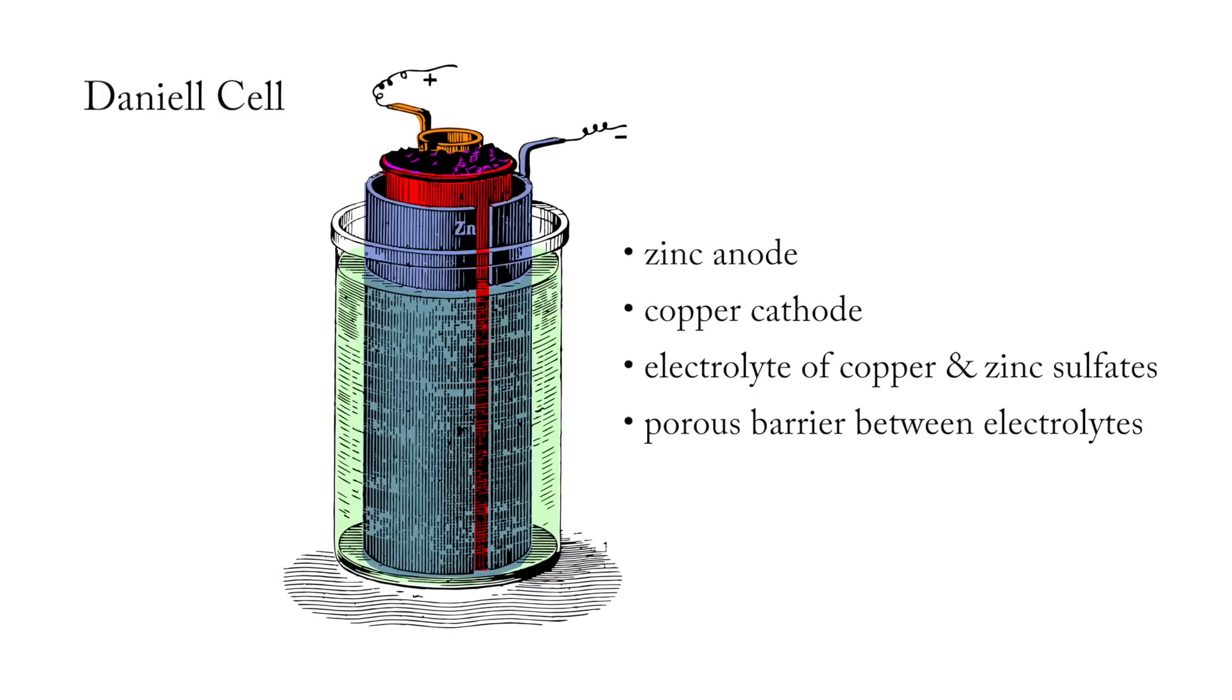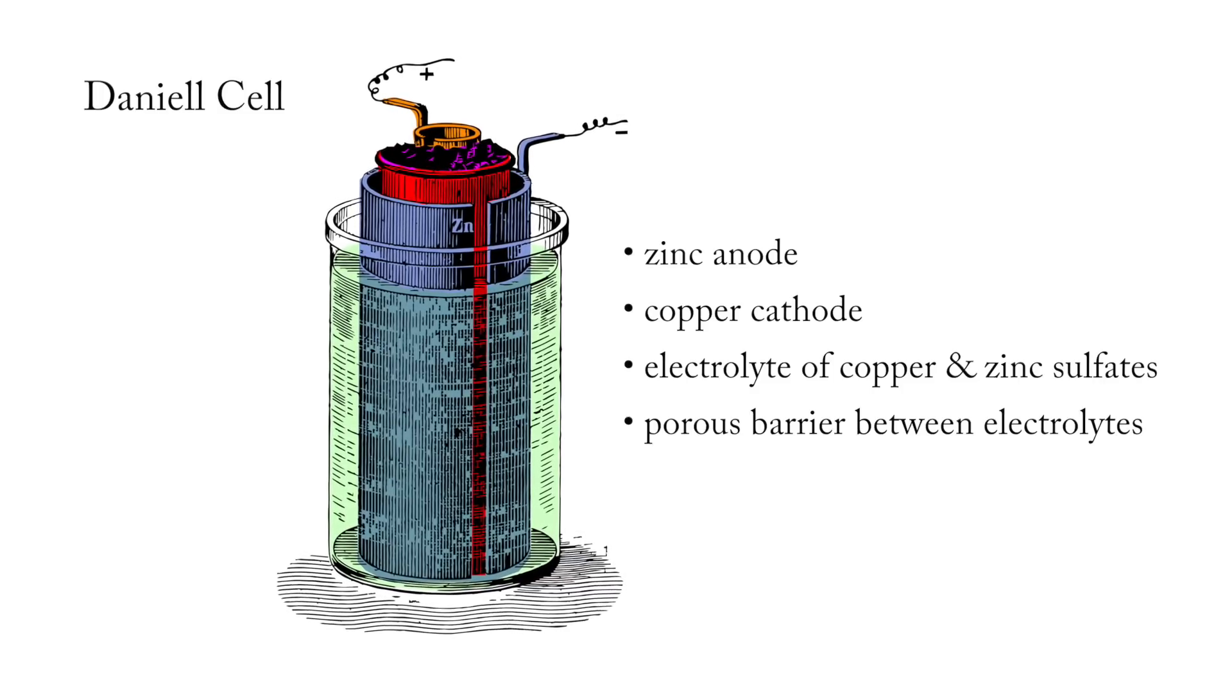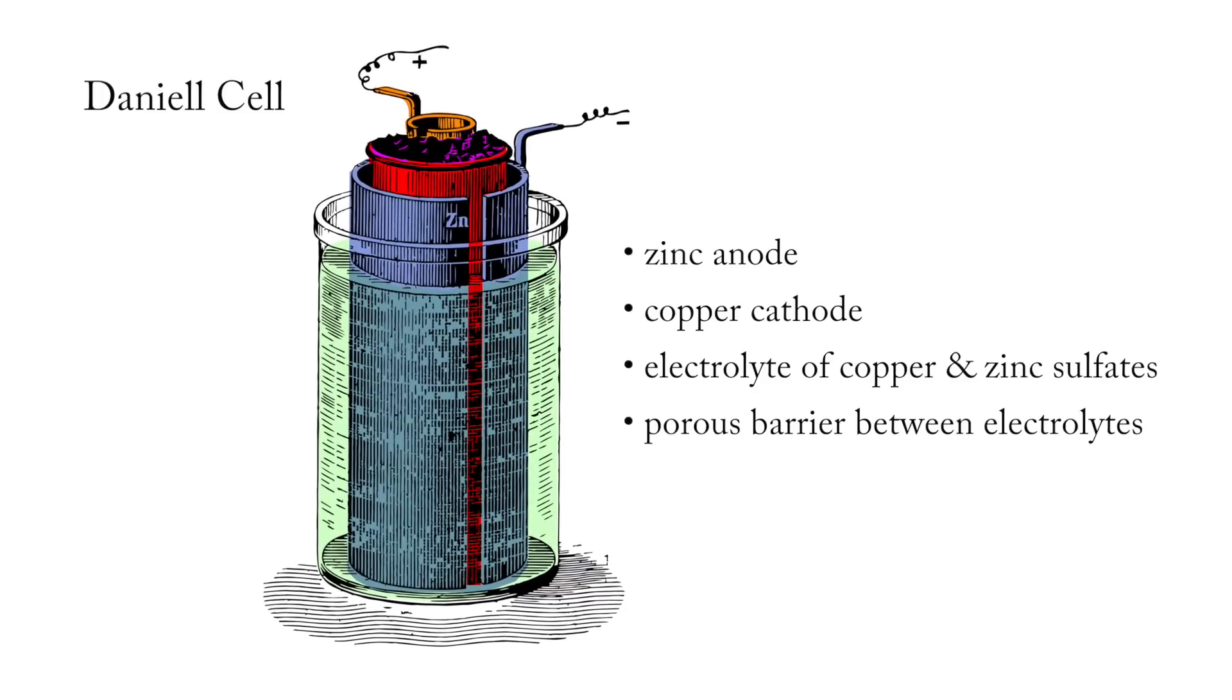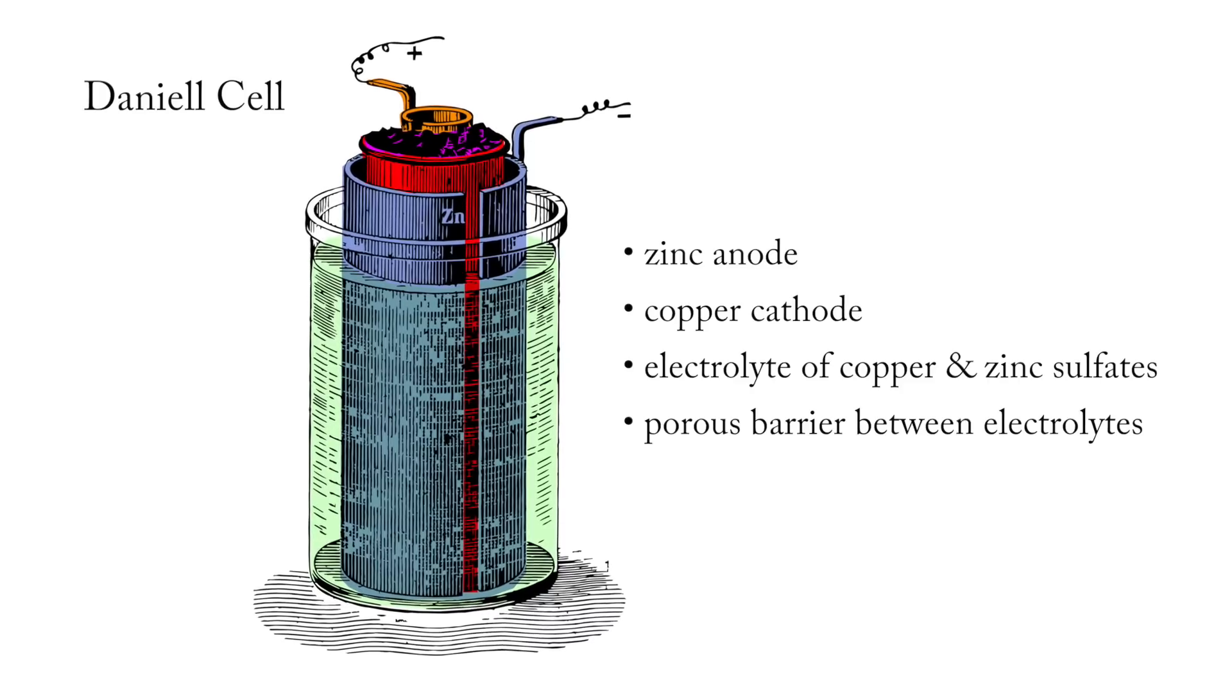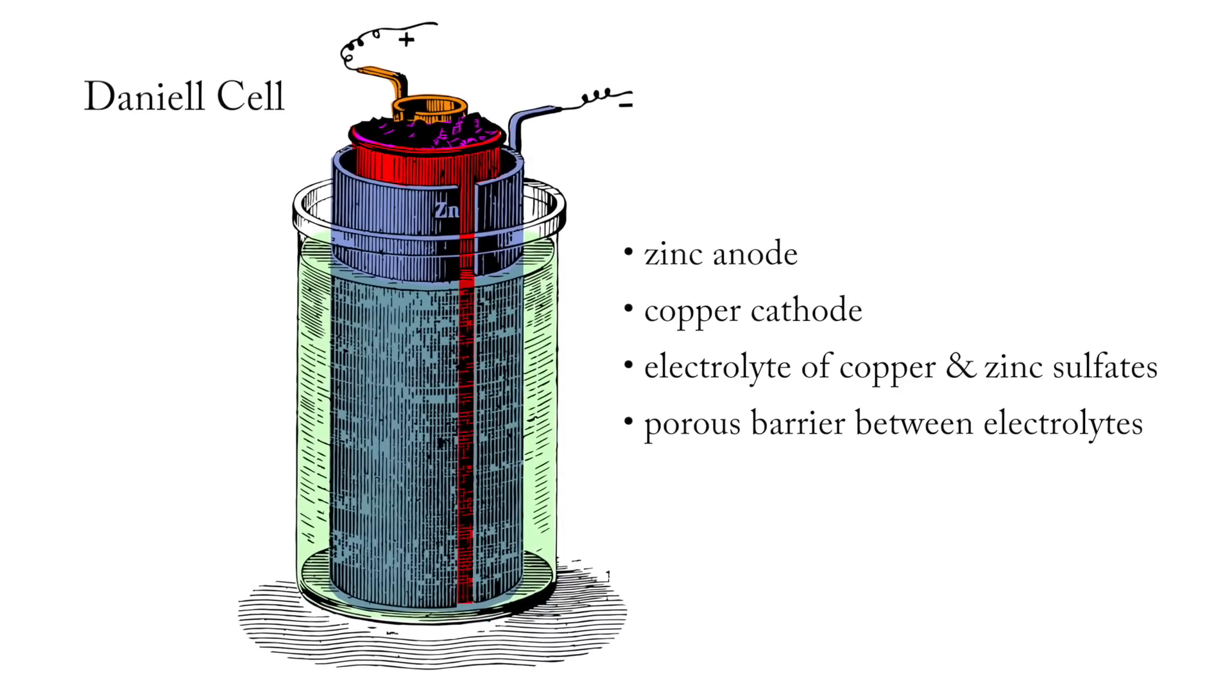The porous earthenware allows ions to pass between the electrolytes, but hydrogen bubbles are prevented from forming. This greatly increased the cell's lifespan when compared to a voltaic pile.